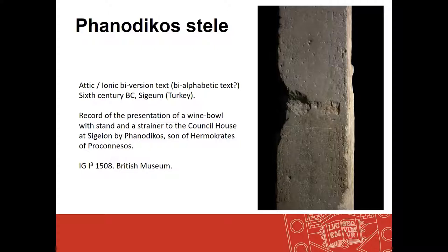There are also dialect-biversion texts that we might even think of in some cases as bi-alphabetic texts. The most famous of these is perhaps the Phanodikos Stele, where the text is in Attic and Ionic — very similar dialects of Greek — but what is immediately the visual difference between them is the two scripts. Perhaps the two dialect versions are important, but maybe the two versions of the script are even more important. Some of these bi-versions are on stone in official formal texts, but there are also graffiti examples on ceramics where someone has written their name in two different scripts, though not really in two different dialects.